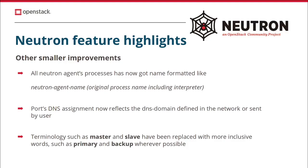Last but not least, we also changed terminology in our code base — for example, we changed words like 'master' and 'slave' to 'primary' and 'backup'. This is mostly an internal change in the Neutron code and not very visible to users, but it's still important to mention. And that's all the updates about the Neutron project in the Victoria cycle. Thank you and goodbye.